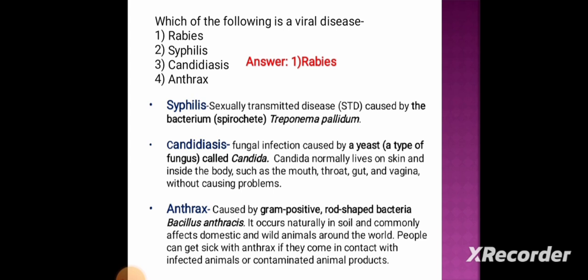Anthrax is caused by the gram-positive rod-shaped bacterium Bacillus anthracis. It occurs naturally in soil and commonly affects some domestic and wild animals around the world. People can get sick with anthrax if they come in contact with infected animals or contaminated animal products.